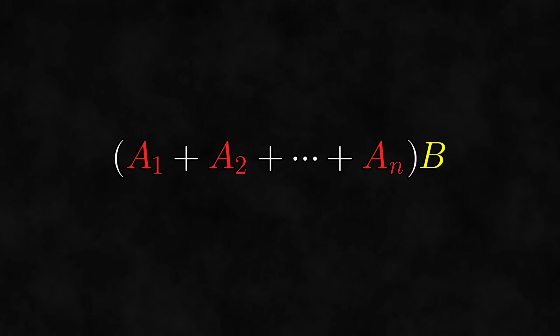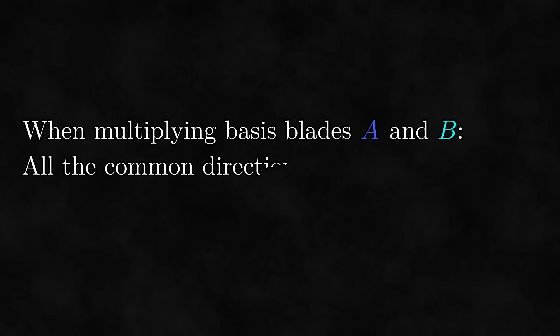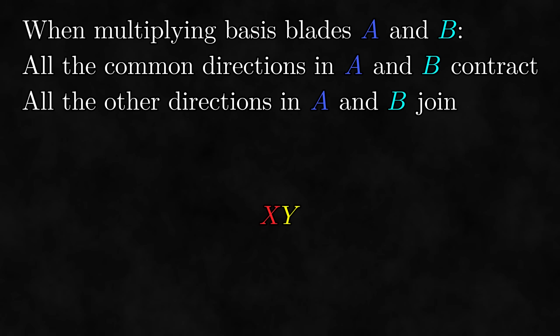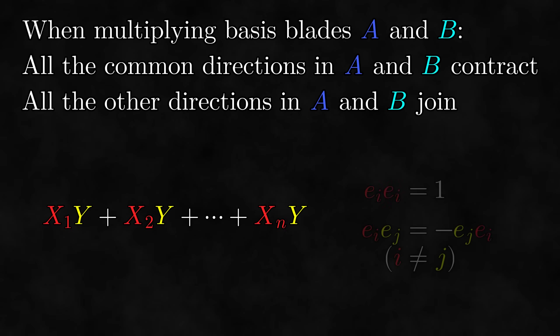In general, when multiplying two multivectors, you might need to split one object into arbitrarily many parts before you can distribute and multiply each part separately. When multiplying two basis blades, all of the directions that are common between the two end up contracting, and the rest of the directions end up joining. To multiply arbitrary multivectors, split one multivector into several parts that are each parallel and/or perpendicular to the other, then distribute and find the product of each part separately using contractions and joins. In higher dimensions, trying to figure this out geometrically is too confusing, so you should just calculate products algebraically anyway. I'm talking about all of this mainly to help you get more comfortable with working with the geometric product.